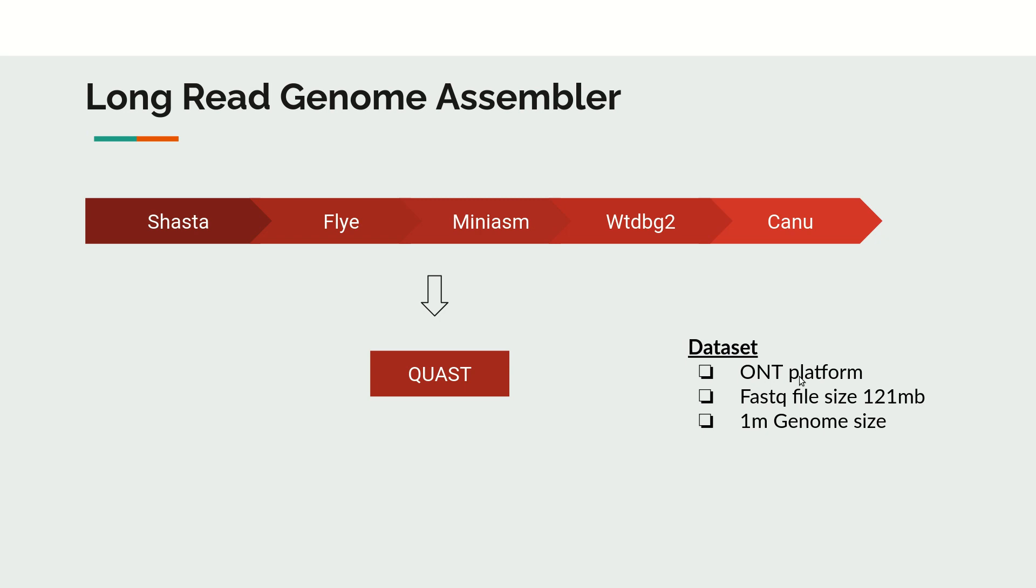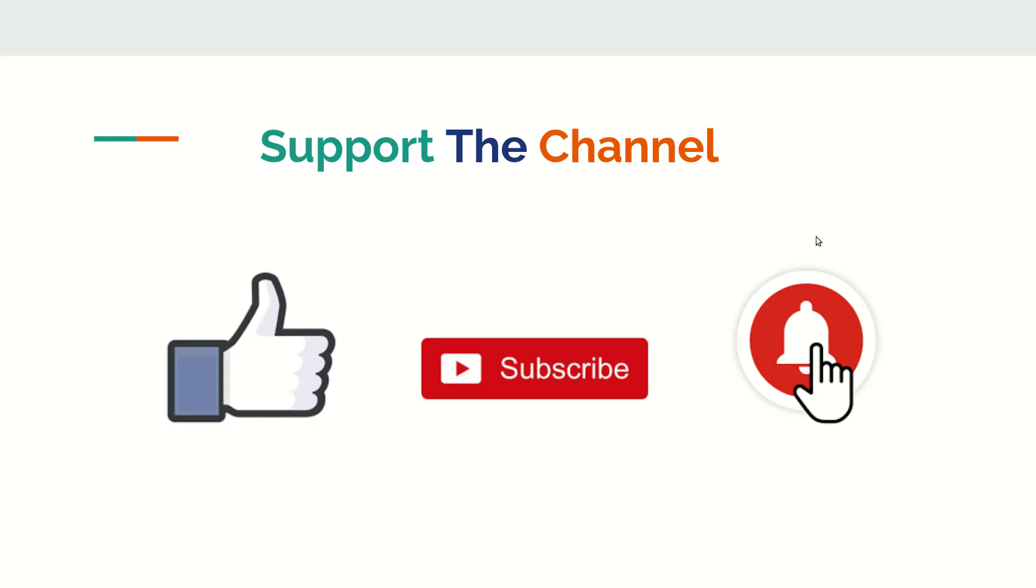For this demo purpose, we will be using sequence data from the ONT platform, Oxford Nanopore Technologies platform. We will be taking a very small FASTQ file which is hardly 121 MB in size, and it belongs to a genome of roughly 1 million genome size. In the next video, we will start with Shasta and then go sequentially.